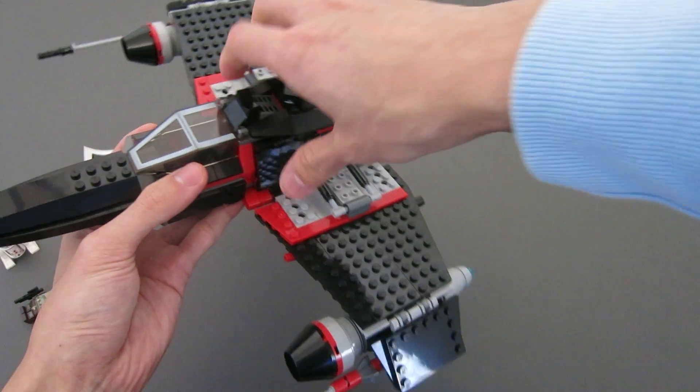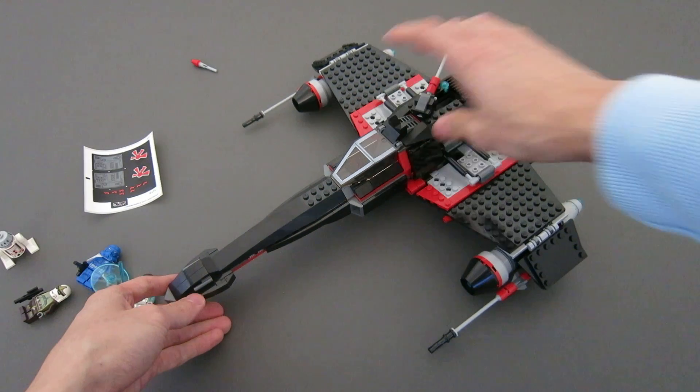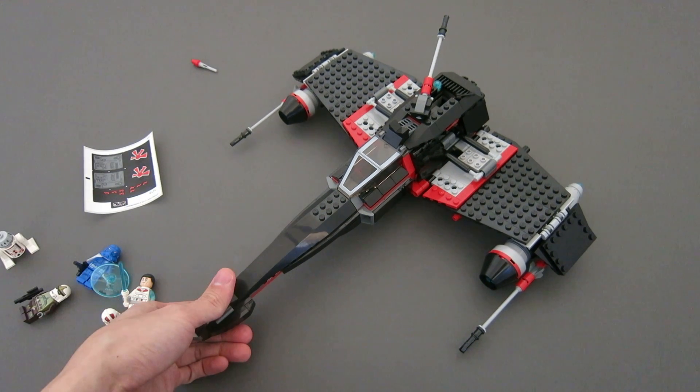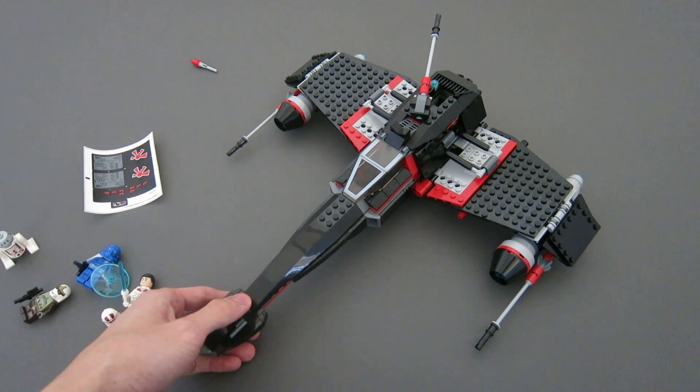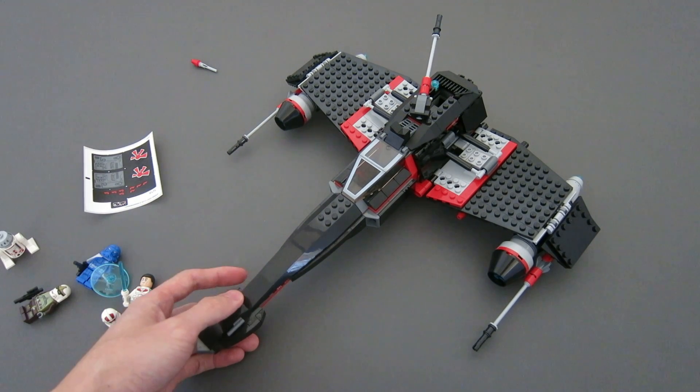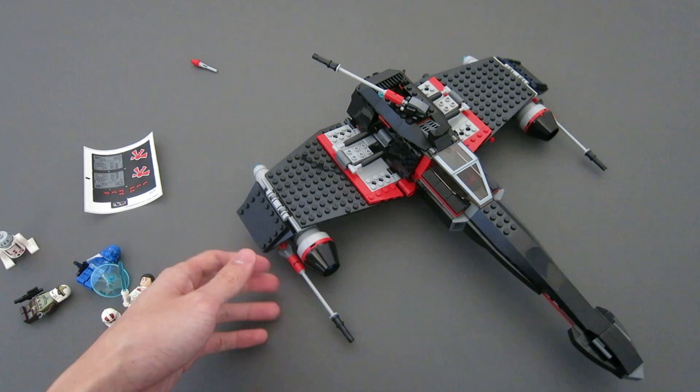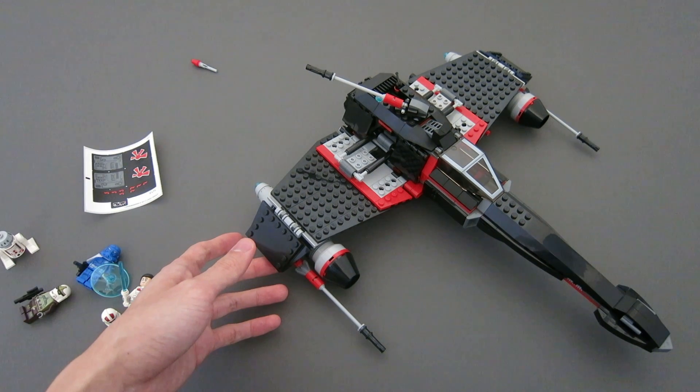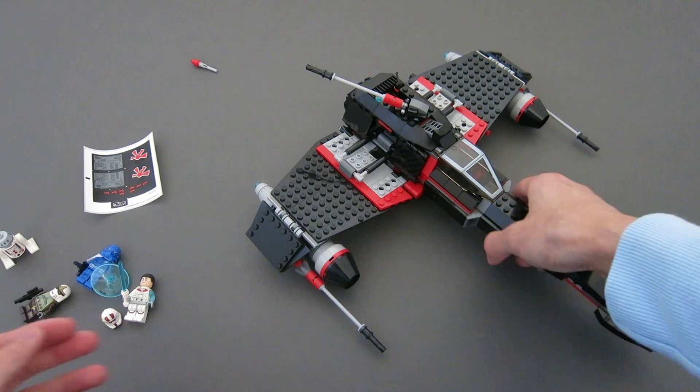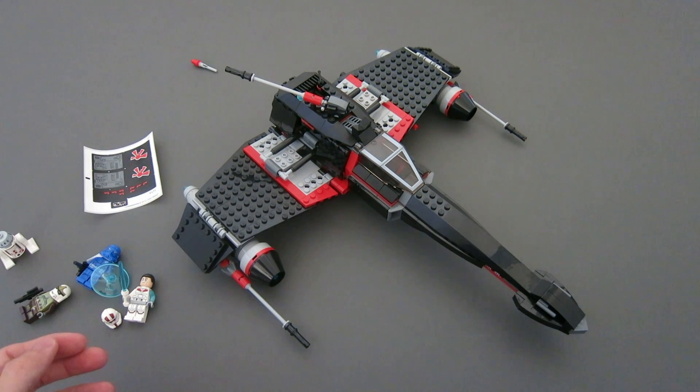Other than that, pretty standard model, nothing too fancy. Color scheme is pretty basic—red, black, and gray. Definitely I would not buy this set for parts, and if you can catch it on sale, then it's much more reasonable. $70 is quite expensive. So I hope you enjoyed this review and thank you for watching.